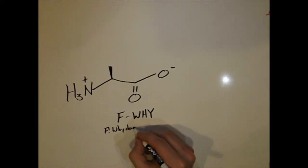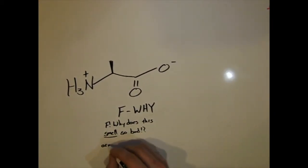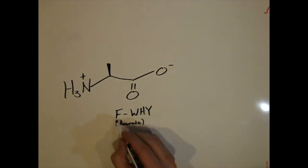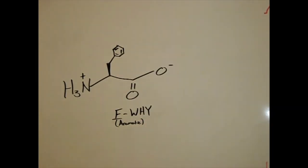Our second group is the aromatic group. We remember this with the sentence F. Why does this smell so bad? Smell meaning aromatic. The first is phenylalanine. Phenylalanine has a simple phenyl group attached to the methyl.